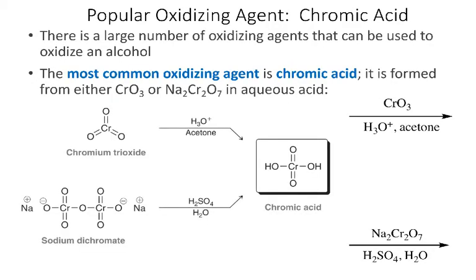There are a large number of oxidizing agents we can use to convert an alcohol into an aldehyde, a ketone, or a carboxylic acid. One of the most common is chromic acid, generally formed from either chromium(VI) oxide or sodium dichromate in aqueous solution. In an organic synthesis step, this would look like chromium(VI) oxide with acidic conditions and acetone, or sodium dichromate with sulfuric acid and water.